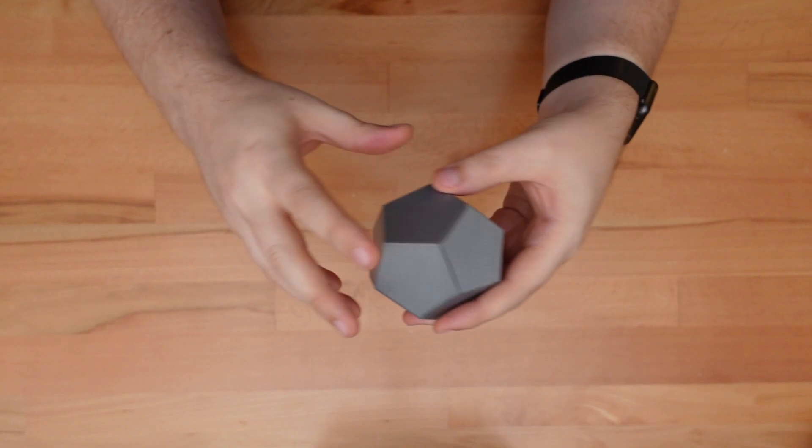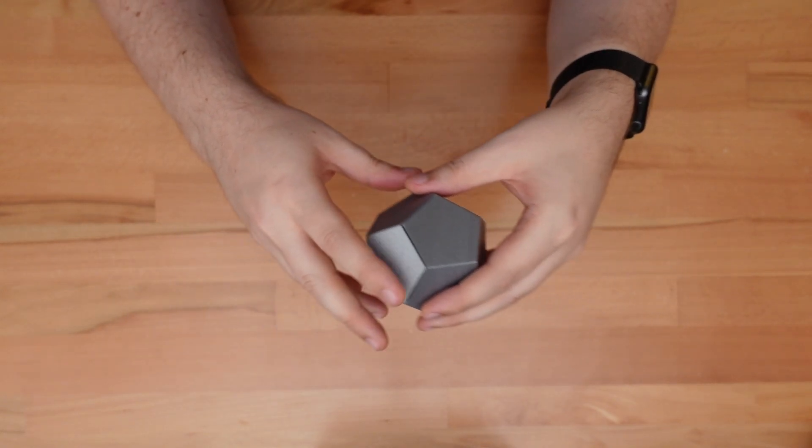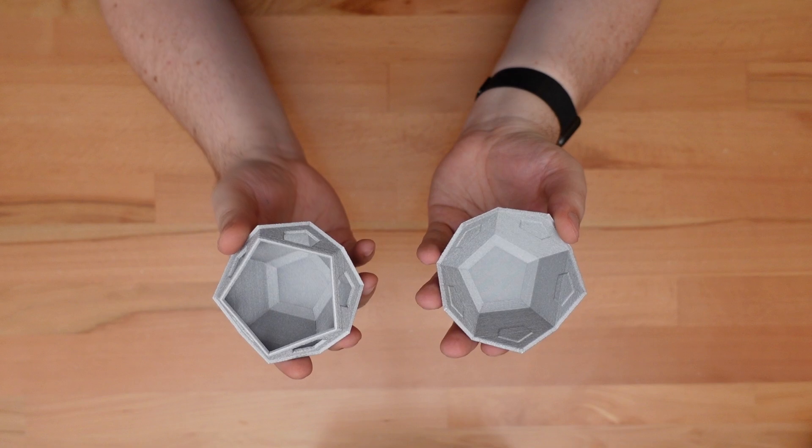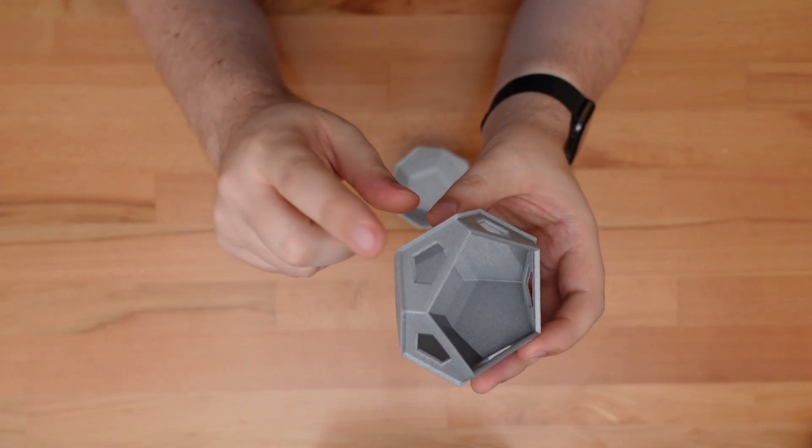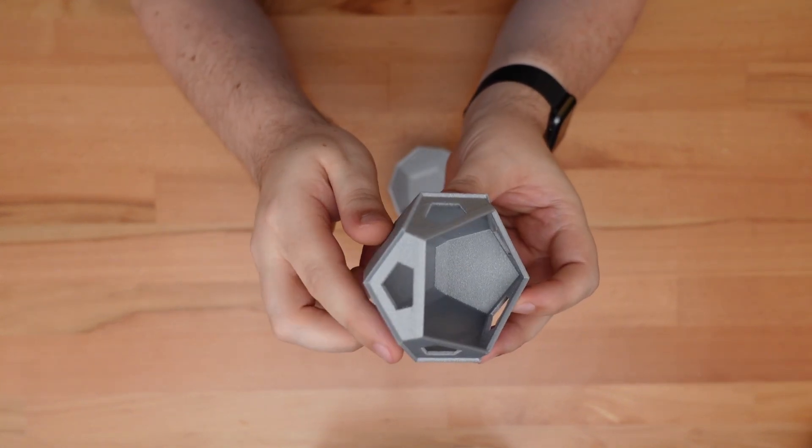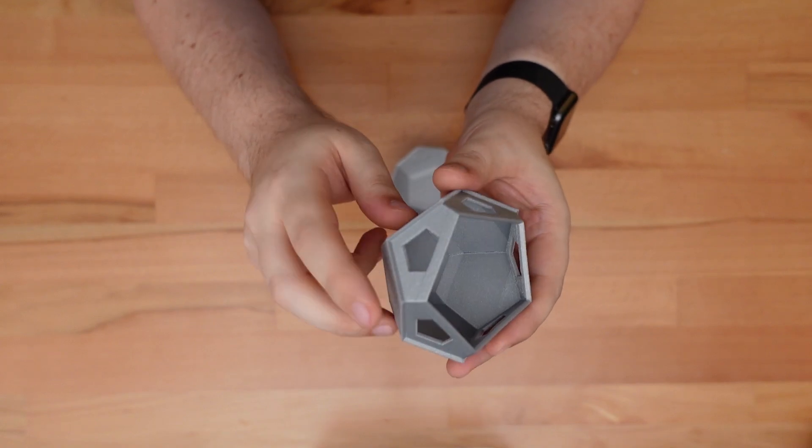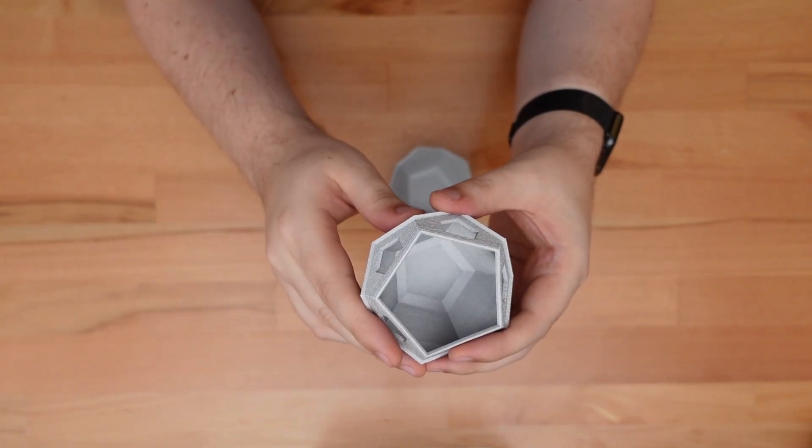These containers are easy to print and require no supports. Just print both halves open side up, like this. The base does have five bridging sections, one above each latch, but these are really short, no problem for most printers.